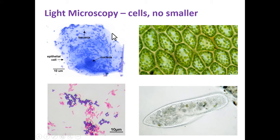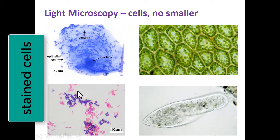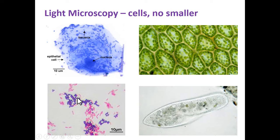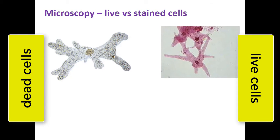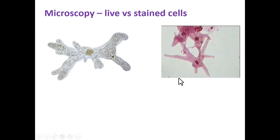Remember, anytime that you stain a cell — such as this cheek cell or these bacterial cells, and there are a whole bunch of bacteria on this cheek from the person's mouth — you have to fix the cells. You have to kill the cells. So you cannot see live cells when you're doing staining. Here's an example of an amoeba — this would be a live cell under regular light or bright field microscopy, and here is a stained cell. These amoebas are dead; they've had dye added to them so that you can see them better.